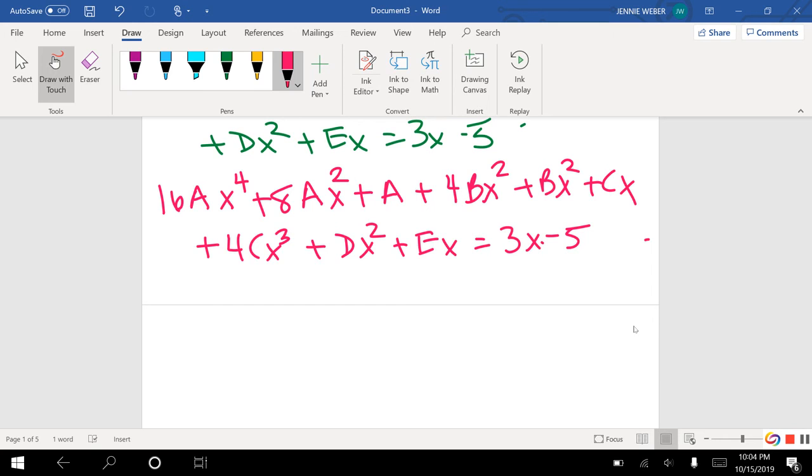So now I'm going to go through, and I'm going to equate. So I have 16x to the 4th, so 16A has to equal 0, because there's no x to the 4th over there. And I just dealt with that. Then x to the 3, so then 4Cx to the 3 has to equal 0.